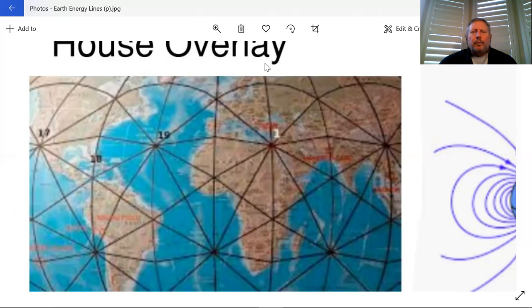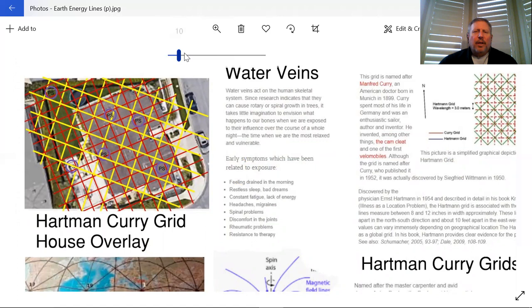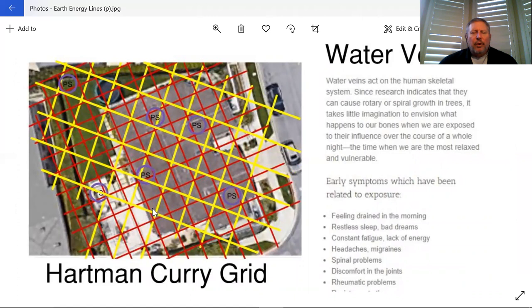The last thing we're going to talk about here to wrap this up is how does this relate to my house? This is a Hartman-Curry grid overlay that I did for a fellow from a photograph. It's not as accurate, but I can locate power lines through remote viewing from photographs.